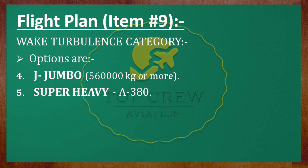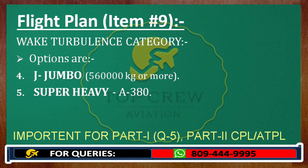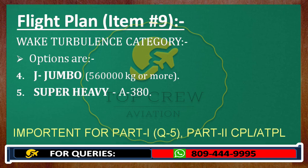For the Jumbo category, the A380 is the only aircraft. This is very important for your Part 1 and Part 2 — DGC exam, CPL, and ATPL both. This is easy but important, so remember it.